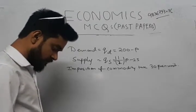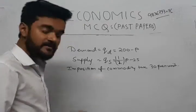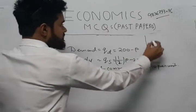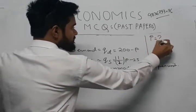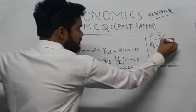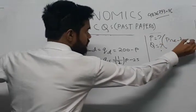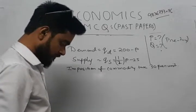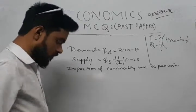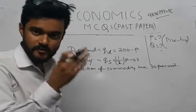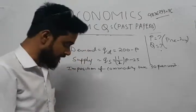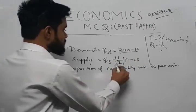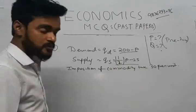We have to calculate the pre-tax equilibrium price and quantity. We know that in equilibrium for a competitive market, demand equals supply. So: 200 minus P equals 0.5P minus 25.